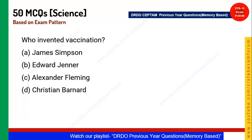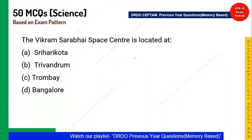Next question: Who invented vaccination? Edward Jenner is the founder and inventor of vaccination. Alexander Fleming, on the other hand, discovered penicillin. Option B is the correct answer.